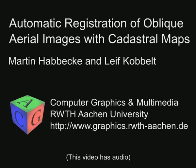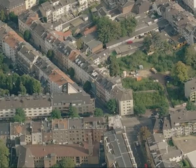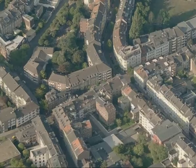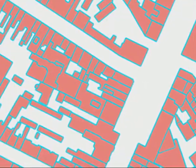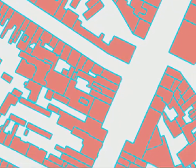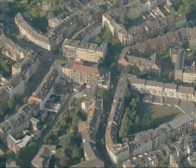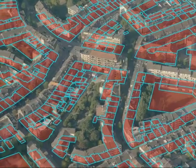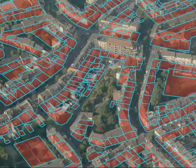In this video we give a brief overview of our automatic approach to the registration of oblique aerial images with cadastral maps. For a sparse set of oblique images taken at the four cardinal directions and a cadastral map without any information about terrain elevation or building heights, our method fully automatically computes a precise registration that enables a variety of applications including 3D reconstruction and model texturing.